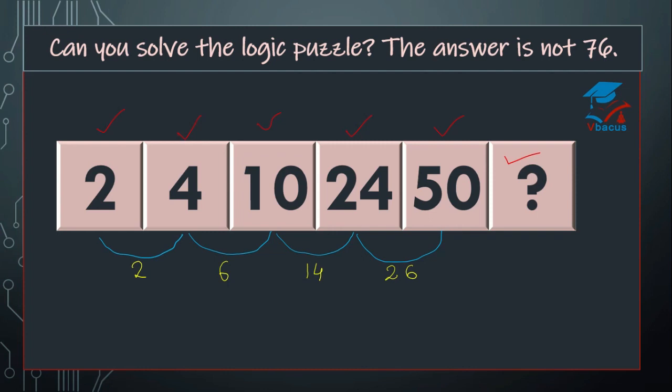We have to go to level 2. Now see, the difference of 2 and 6 is 4. Difference of 6 and 14 is 8. Difference of 14 and 26 is 16. Now, you can see the numbers 4, 8, and 16 and they are the multiples of 4. If we write the next multiple of 4, that is 20.